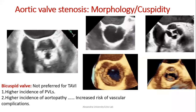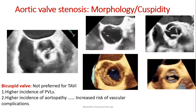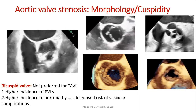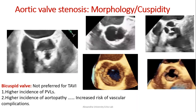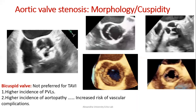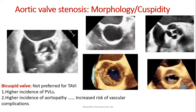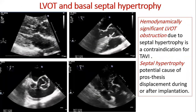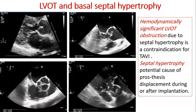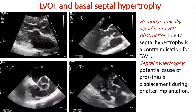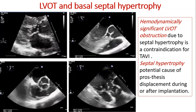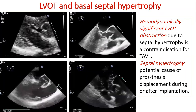In patients referred for TAVR, we should report the number of cusps. Bicuspid or quadricuspid aortic valve is associated with higher incidence of paravalvular leaks, aortopathy, and increased vascular complications, making TAVR less preferred. We should also comment on the LVOT: an associated subaortic membrane or basal septal hypertrophy are contraindications for TAVR, as they carry risk of device displacement during or after implantation.